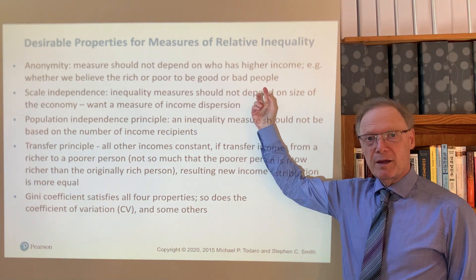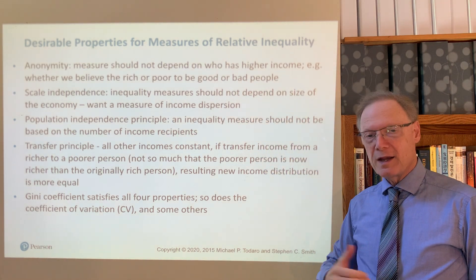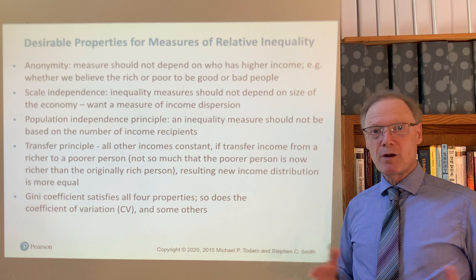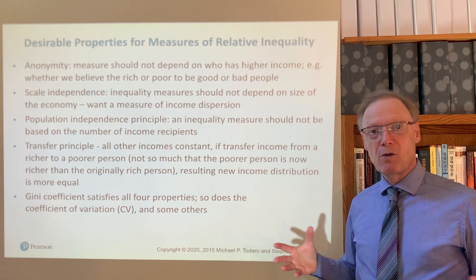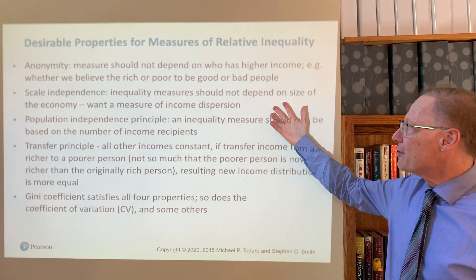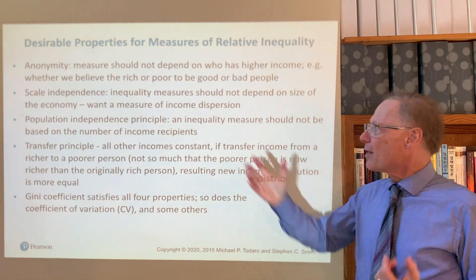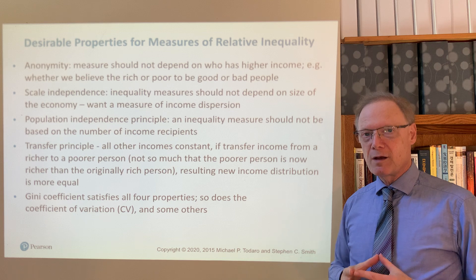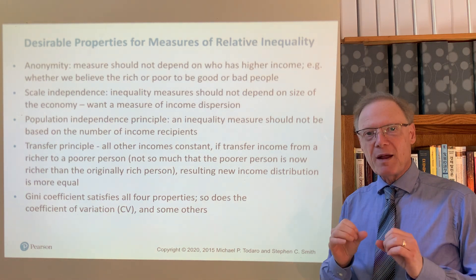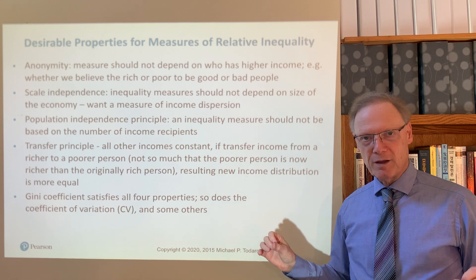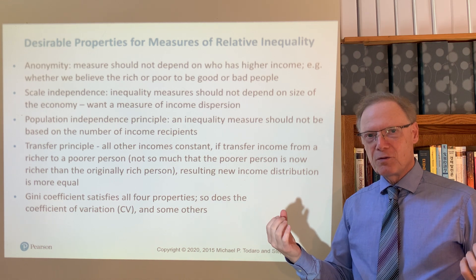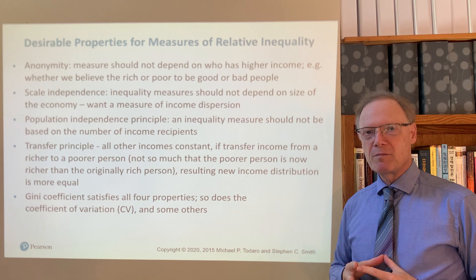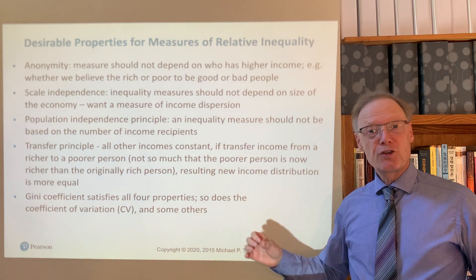First, we begin with anonymity. This is very straightforward: any measure of inequality should have nothing to do with the specific people in the economy, or whether we think any of them are good or bad people. The second is scale independence, which says that we want a measure of inequality that does not depend on the size of the economy in income terms — it's about the dispersion of income, not the amounts. So if you double everyone's income, the relative inequality measure should not change.